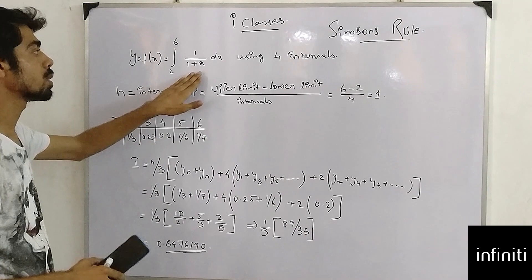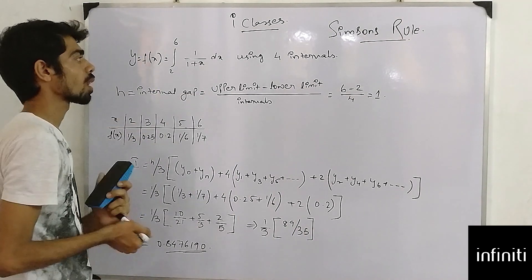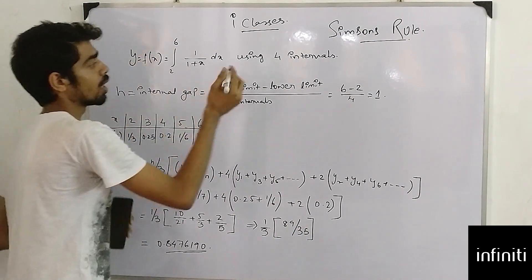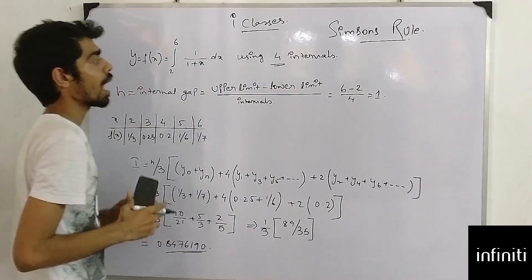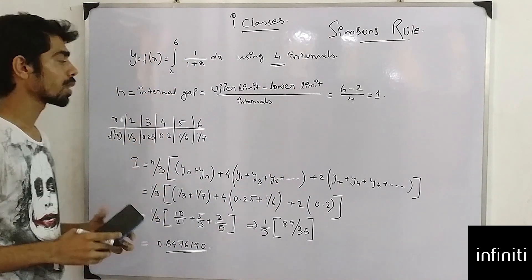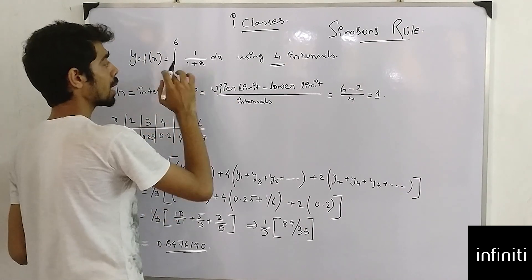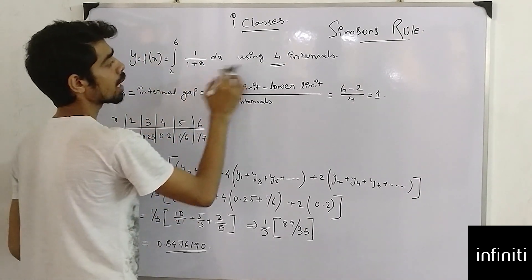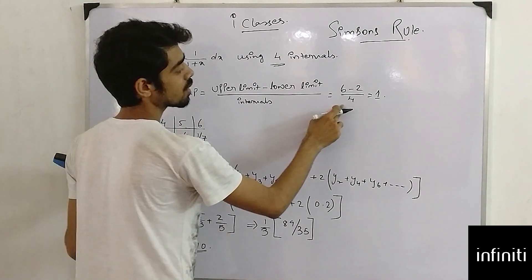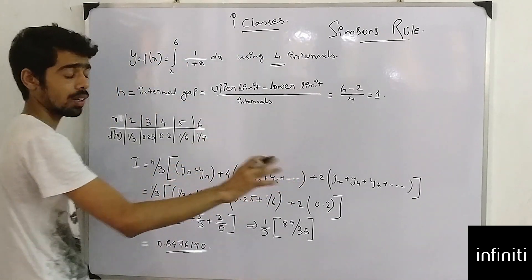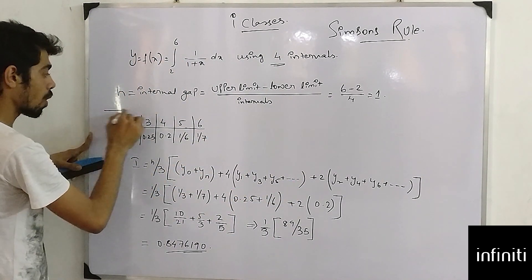So this is my function using four intervals. I have to calculate this sum. What is my internal gap, which is h? It is again upper limit minus lower limit by number of intervals, which is 4: 6 minus 2 by 4, which equals 1.